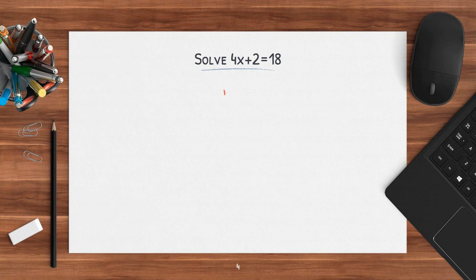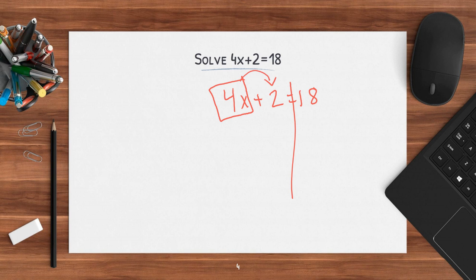These ones are a little easier. I have 4x plus 2 equals 18. I draw my line down my equal sign. My goal is to get rid of what is not with x. The 4 and the x are together, so I'll do that second. First I need to get rid of the 2. So I start by subtracting 2 on both sides. Positive 2 minus 2 cancels out. I bring down my 4x. So now I have 4x equals — what is 18 minus 2? 16.